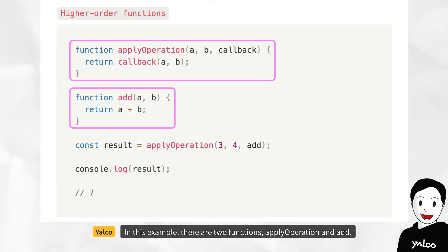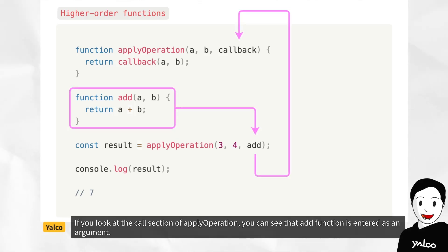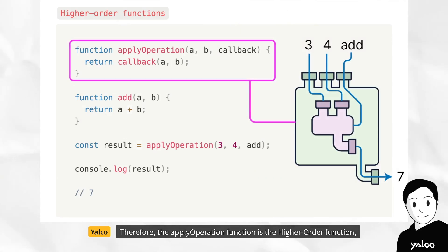In this example, there are two functions, applyOperation and add. If you look at the call section of applyOperation, you can see that add function is entered as an argument. Therefore, the applyOperation function is the higher-order function, and the add function is the callback function.